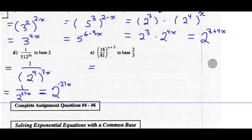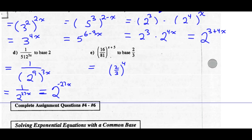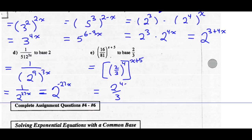Part E: 16 over 81, all to the x plus 5 — write that as a power of base 2/3. Instead of 16/81, we want 2/3. Since 2 to the 4th is 16 and 3 to the 4th is 81, then 2/3 to the 4th equals 16/81. But that whole thing was raised to the exponent x plus 5. So 16/81 to the (x+5) equals (2/3 to the 4th) to the (x+5). Using the power of a power rule, keep our base of 2/3 and multiply the exponents: 4 times (x + 5) is 4x plus 20.